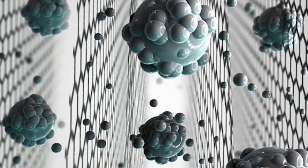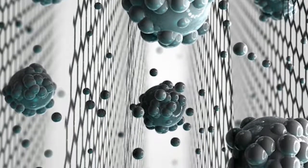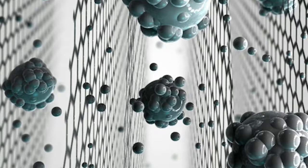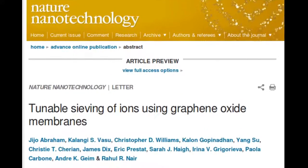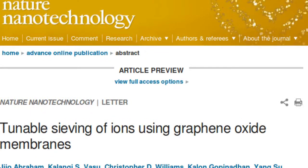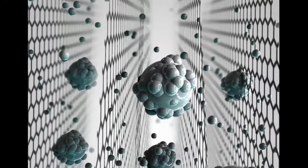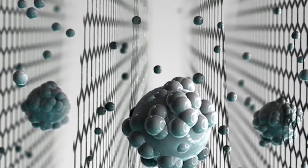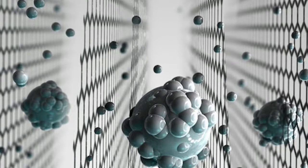The new findings from scientists at the University of Manchester were published in Nature Nanotechnology. Previously, graphene oxide membranes have shown exciting potential for gas separation and water filtration. Membranes developed at the National Graphene Institute have already demonstrated the potential of filtering out small nanoparticles, organic molecules, and even large salts.